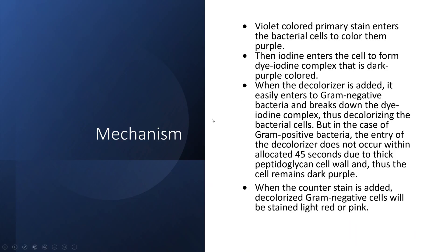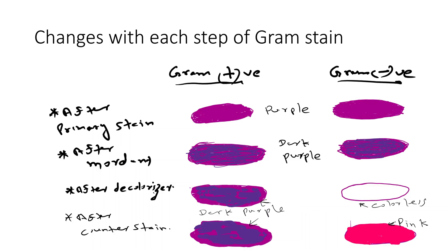Next we apply the mordant, which is Lugol's iodine or aqueous iodine. It enters the cell to form the dye-iodine complex. The iodine enters and combines with the dye within the cell wall to form a dye-iodine complex, which is dark purple colored. You can see in this picture — dark purple color after the mordant, which is the dye-iodine complex.